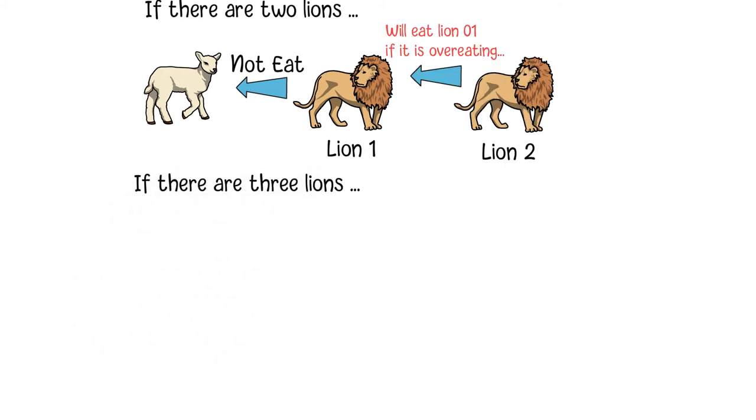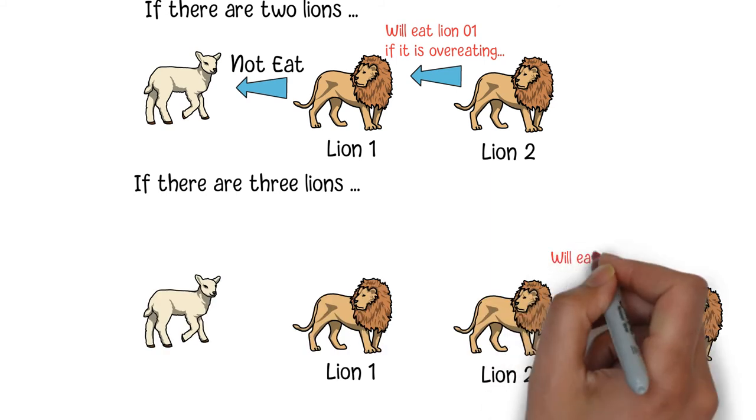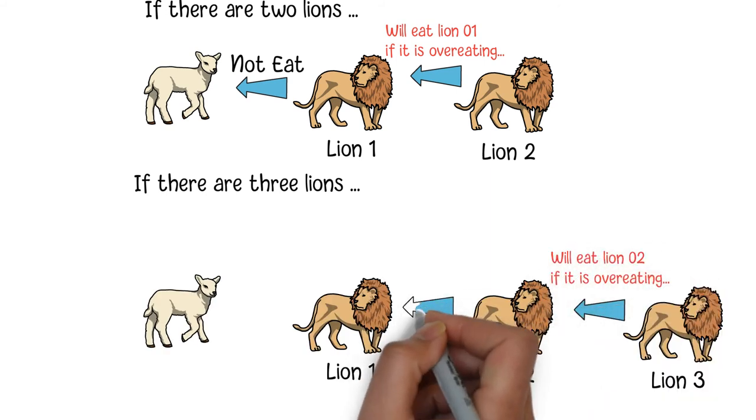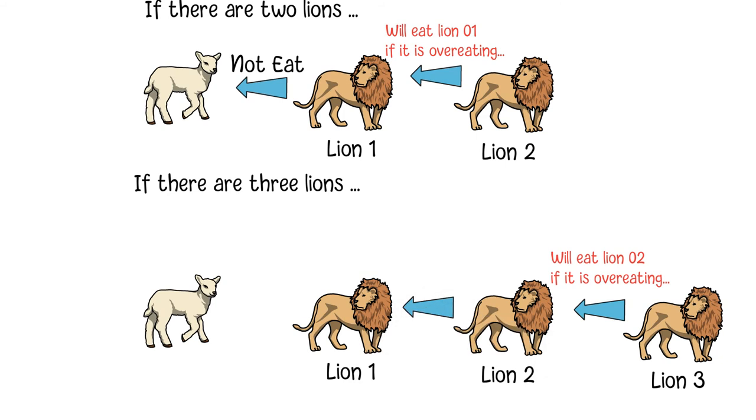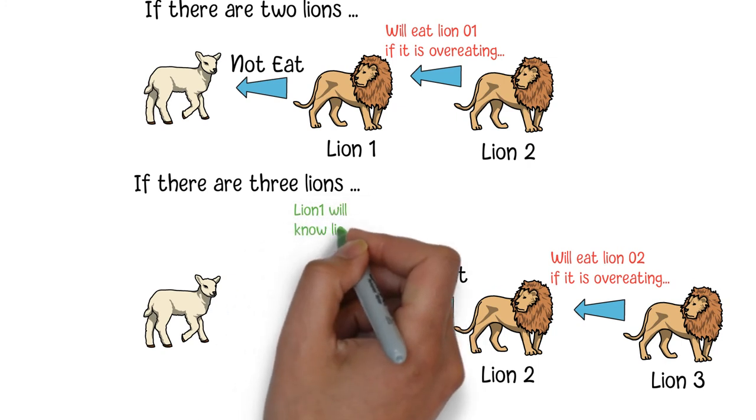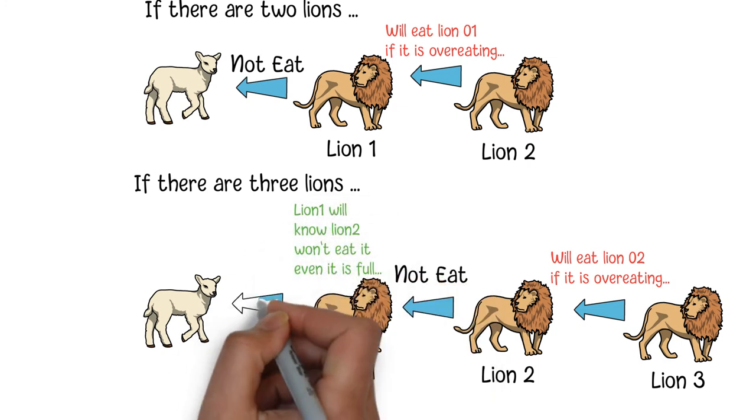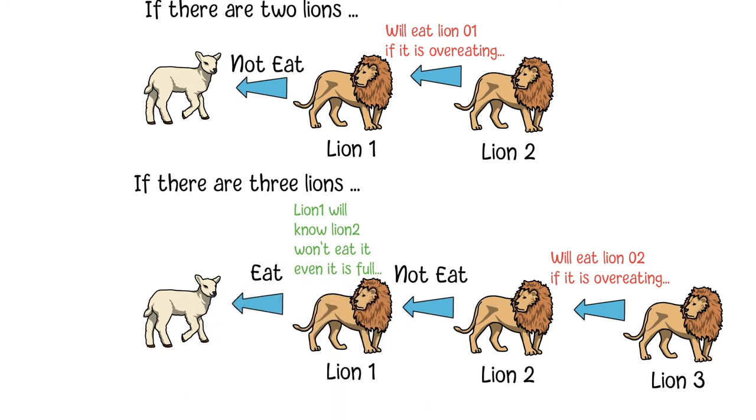Similarly, if there are three lions in the row, lion 3 will definitely choose to eat lion 2 if it is overeating. So, for safety purposes, lion 2 will not eat lion 1 even if it is overeating. Of course, lion 1 will definitely know what lion 2 is thinking, and it can safely eat the lamb without worrying about being eaten by lion 2.